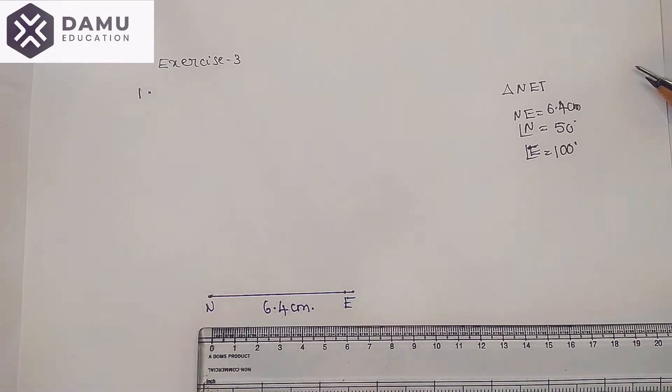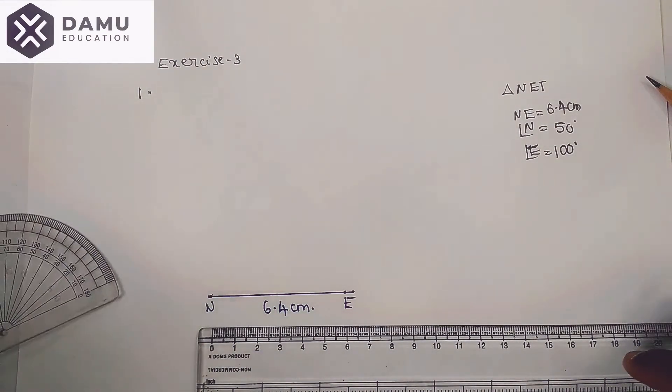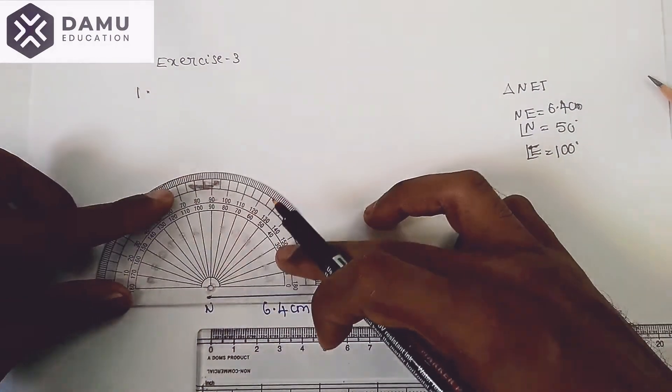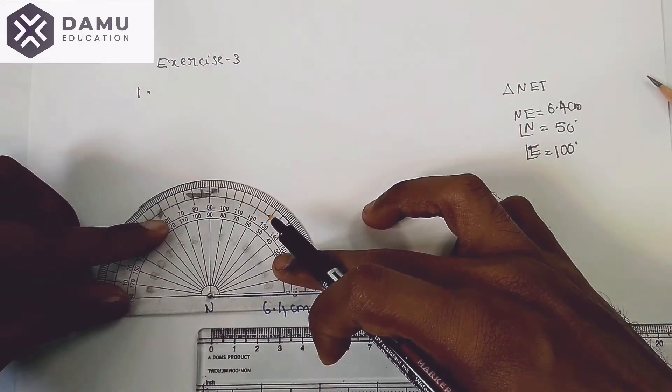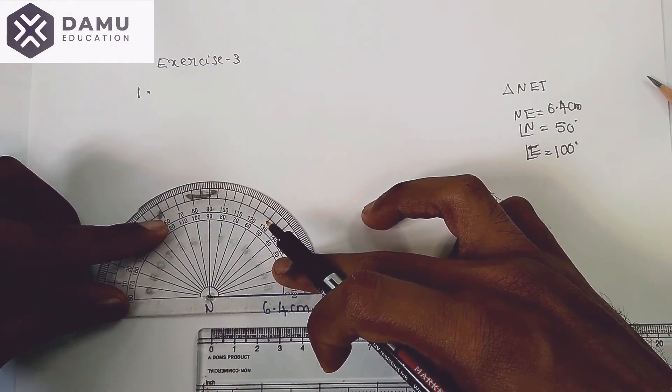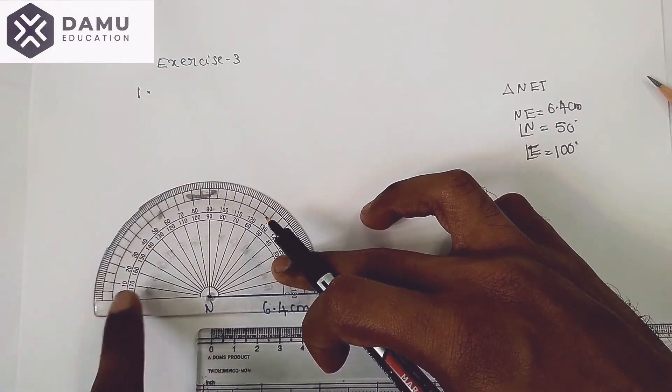Then we are going to draw 50 degrees at angle N. We are going to measure the angle by placing the protractor here. Keep your protractor center point and keep zero degrees here with the protractor.